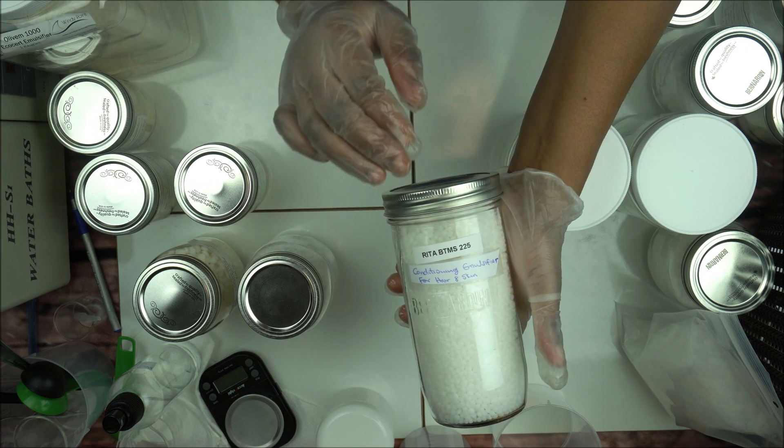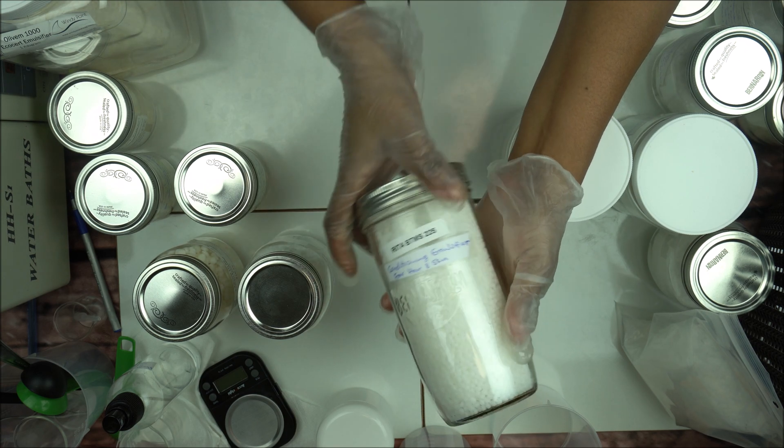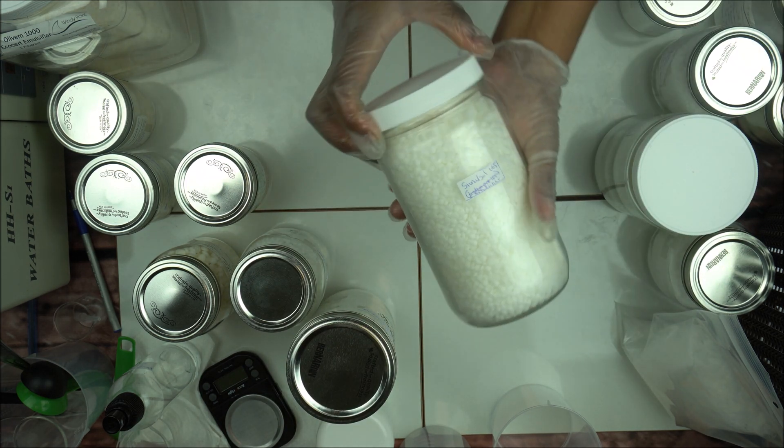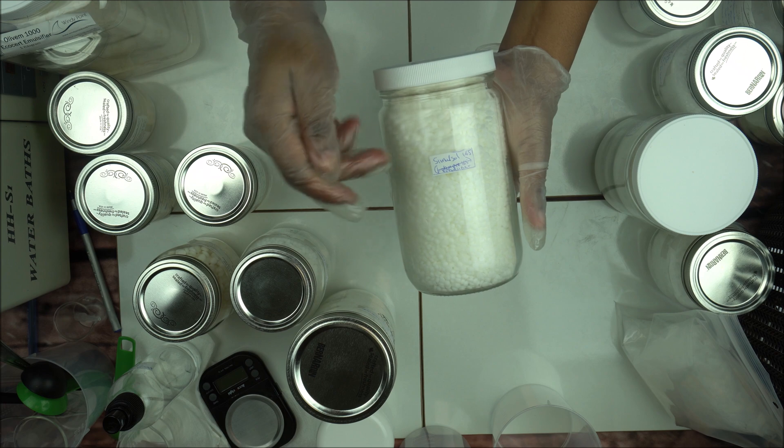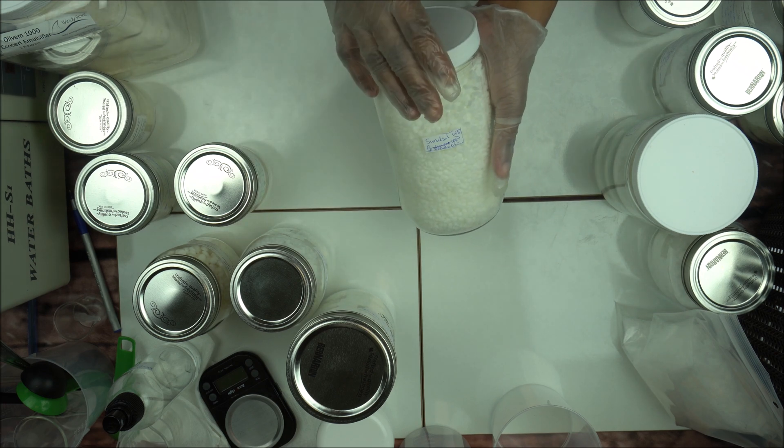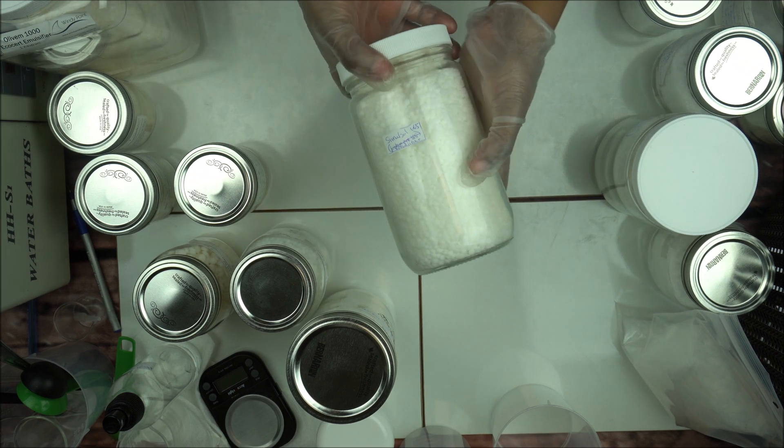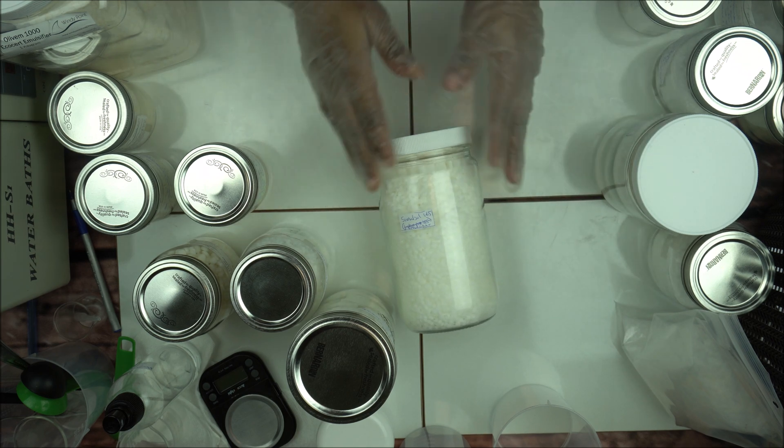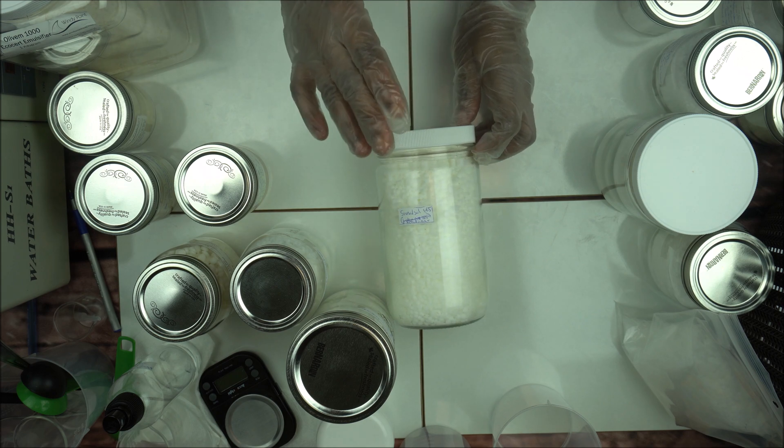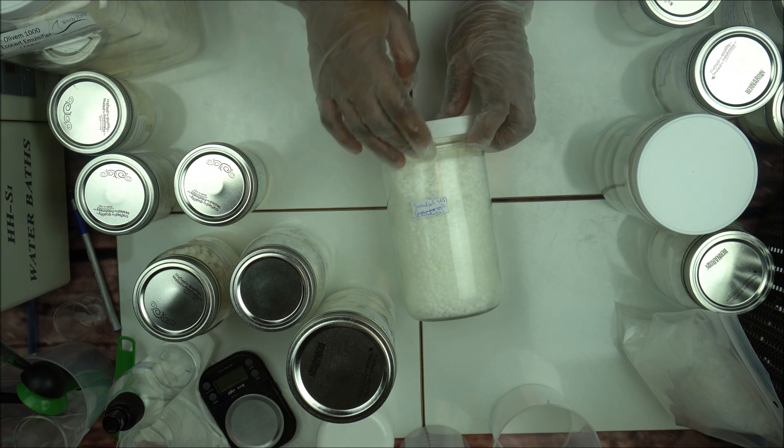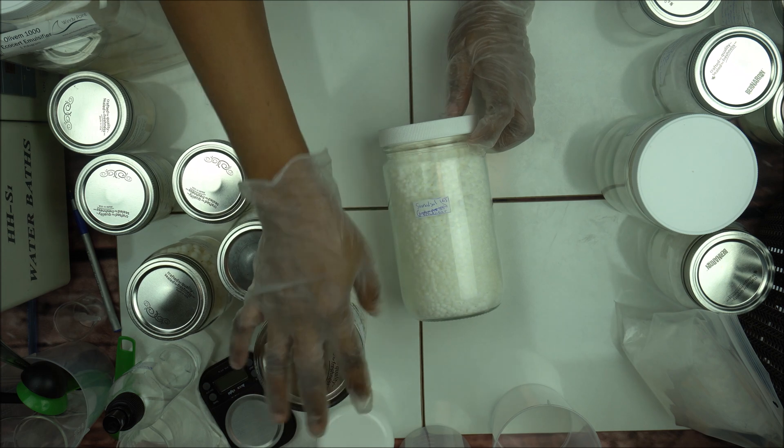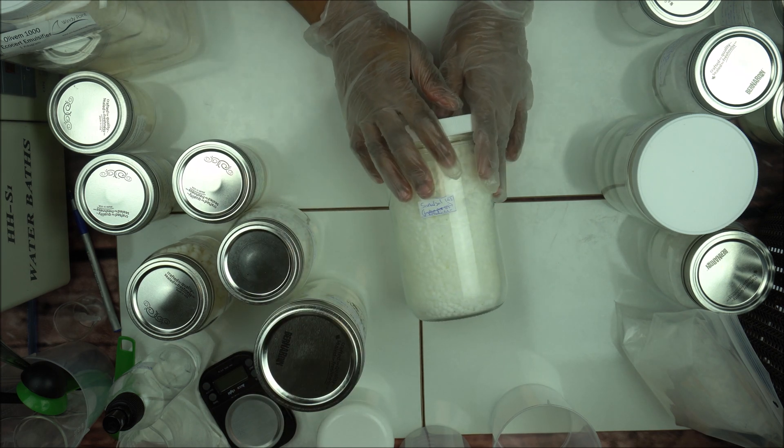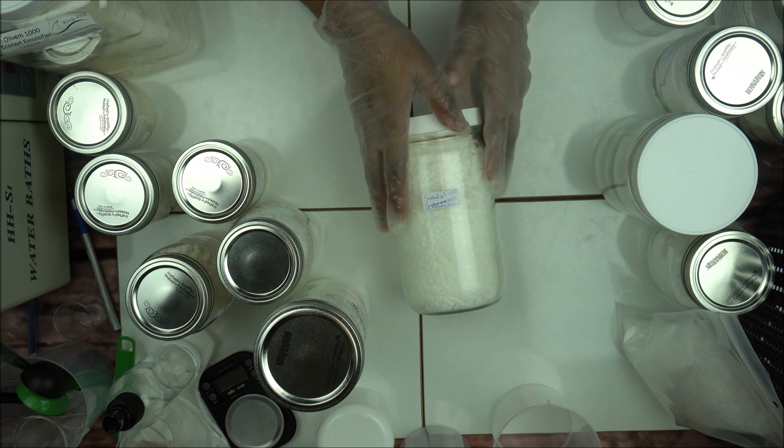Another very good emulsifier is called Simulson 165 by Lotion Crafter. This emulsifier is a go-to emulsifier because it makes very, very good lotion. It imparts beautiful skin feel in lotion. So I'm going to do a project on some of them so that you see the outcome. Simulson 165 by Lotion Crafter is very, very good and I work with it, I love it.